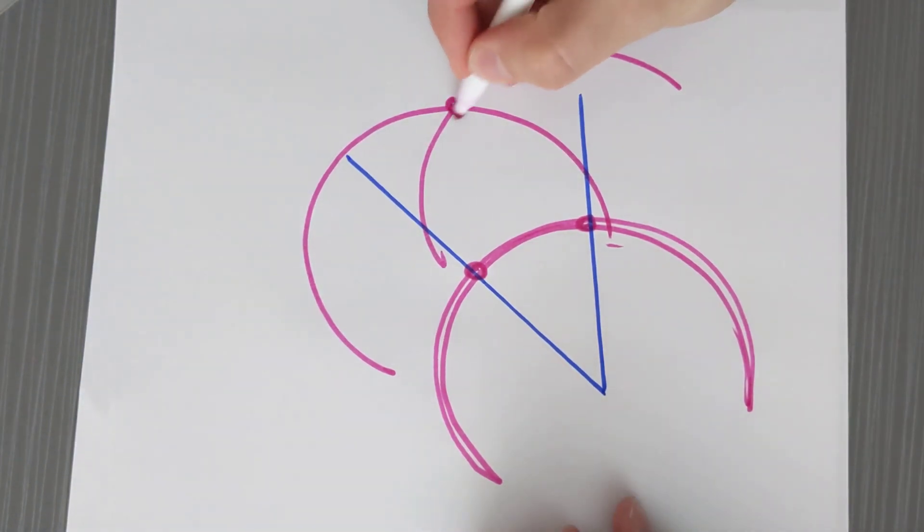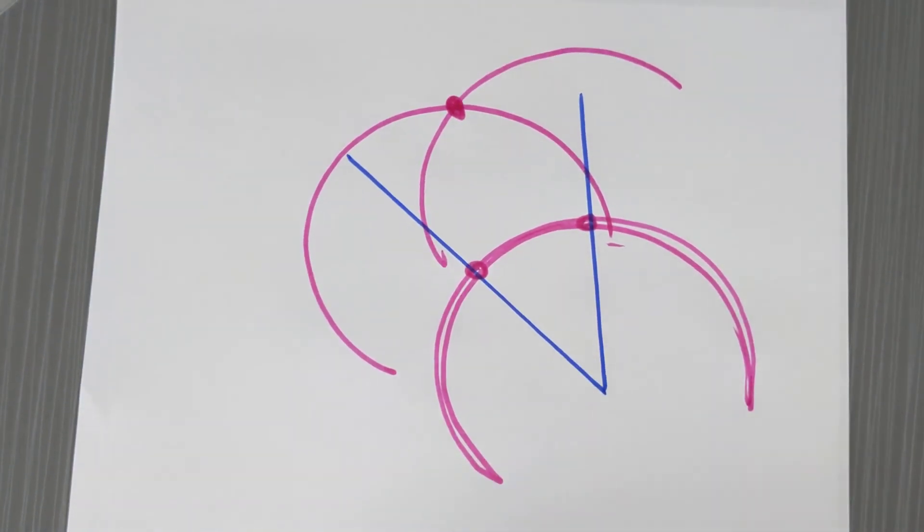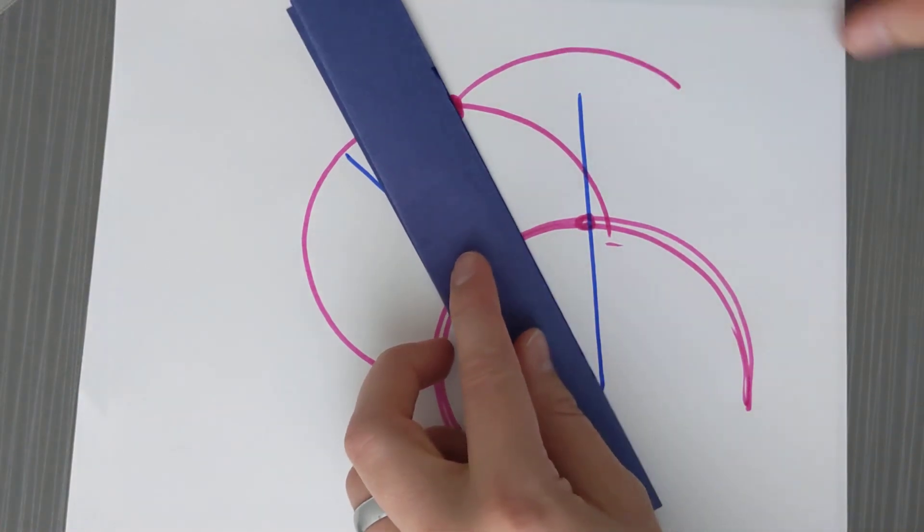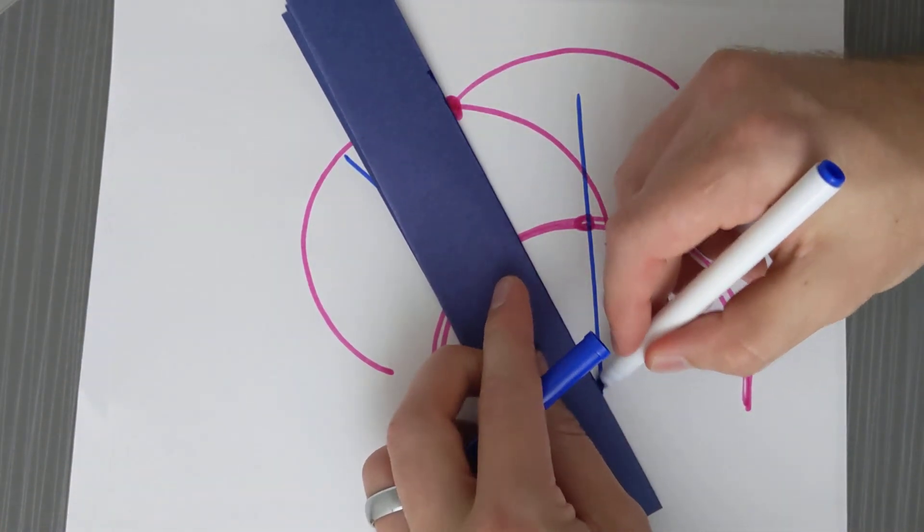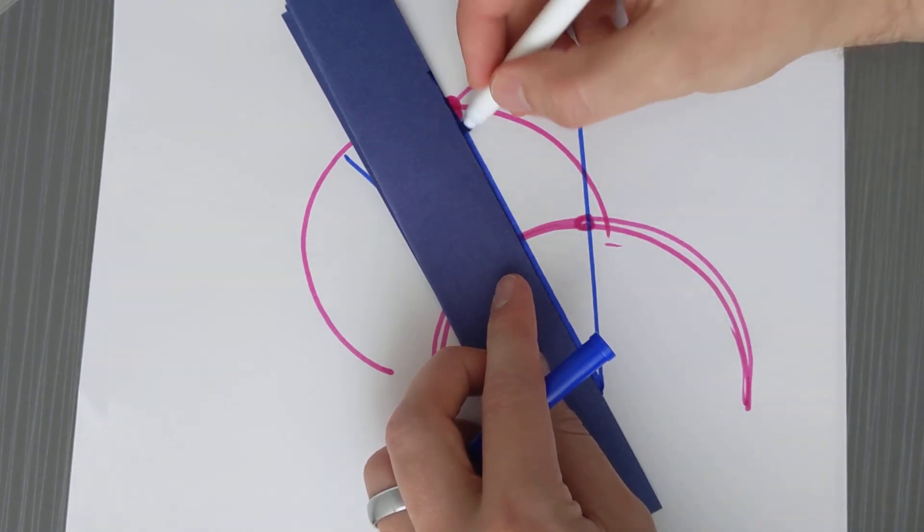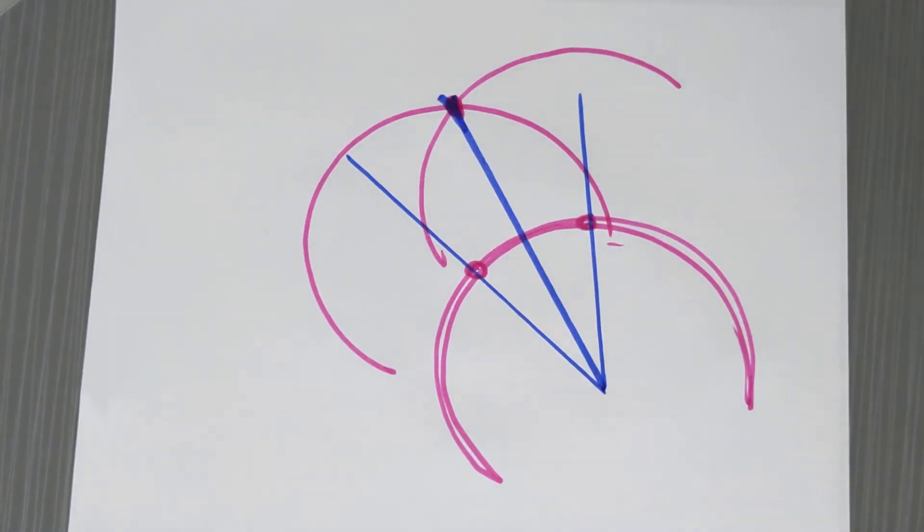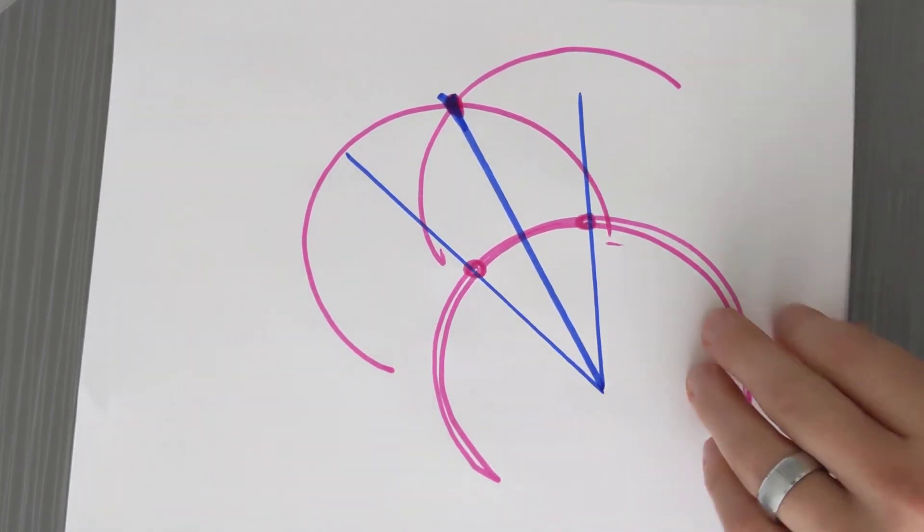Now where those second circles intersect, if you connect the vertex to that point, you have an angle bisector. So now we can cut an angle in half, we can cut a line in half, we can copy a line, we can copy an angle.